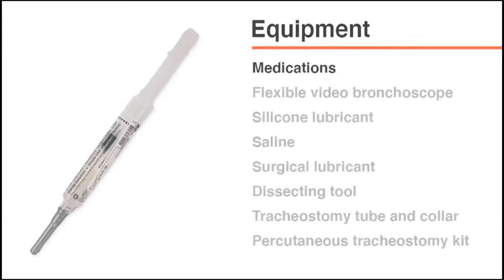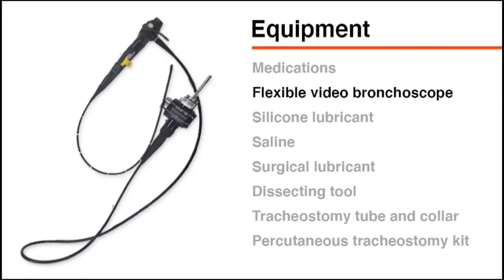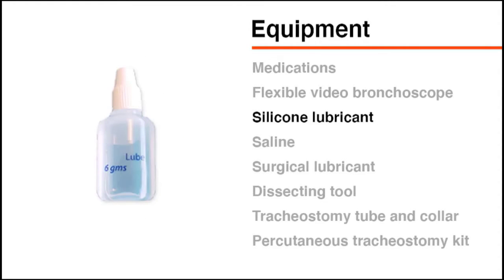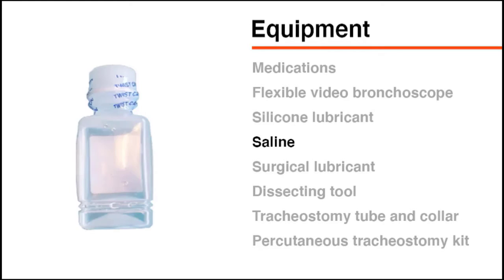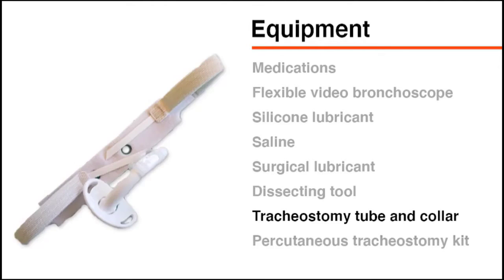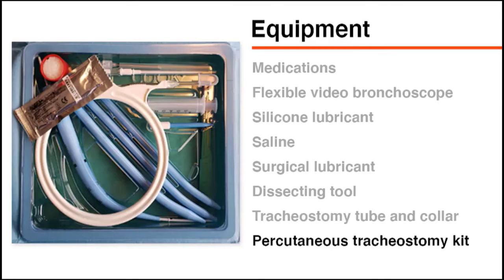To perform a bedside tracheostomy, you will need medications for sedation and paralysis, a flexible bronchoscope — preferably a video bronchoscope since it allows all personnel in the room to visualize the positioning of the oral endotracheal tube — a bronchoscope attachment for the ventilator, silicone lubricant, saline, surgical lubricant, a dissecting tool such as tonsil forceps or curved hemostat, a tracheostomy tube and tracheostomy collar, and a percutaneous tracheostomy kit.